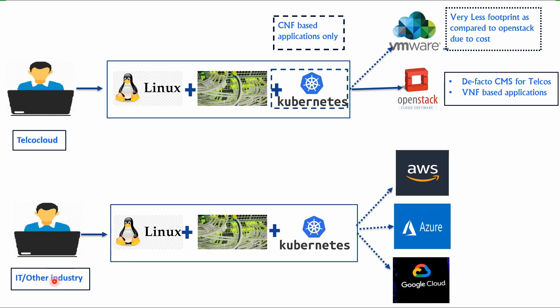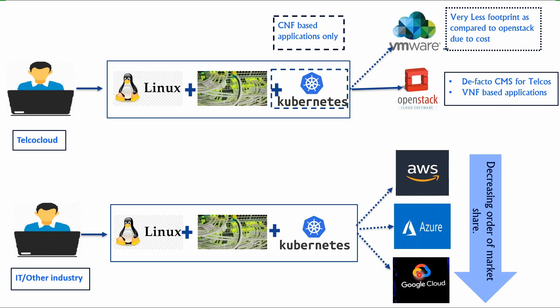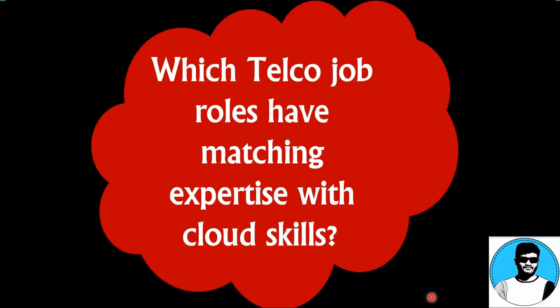For any other industry or generic cloud computing role, the same basic skills apply: Linux + Networking + Kubernetes, plus any one platform out of AWS, Azure, or Google Cloud. This is listed in decreasing order of market share — AWS has the most jobs, followed by Azure, then Google Cloud. Choose the path based on which platform you want to develop yourself on.